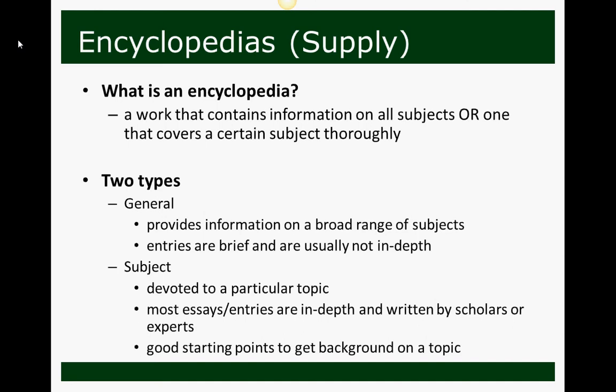Our second type of reference book that supplies information is the encyclopedia. At its most basic, it's a work that contains information on a lot of subjects, or it covers one subject very thoroughly — and as a result there are two types. The general encyclopedia provides information on a broad range of subjects. These are your Encyclopedia Britannicas, and the entries are usually brief — maybe between half a page to two or three pages — and their purpose is to give you an overview of the topic.